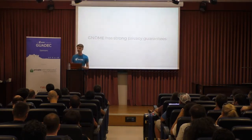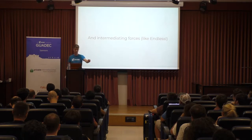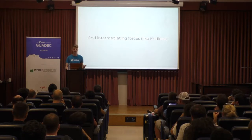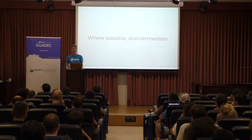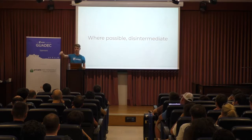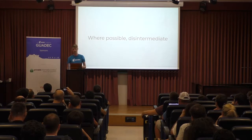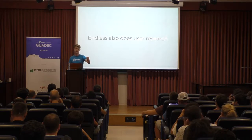GNOME has strong privacy principles and possibly more importantly, intermediating forces — very few people get GNOME's software directly from GNOME. It always comes through a distributor like Endless; we change things, maybe strip stuff out. Debian certainly makes no bones of stripping out a lot of this kind of stuff, and that's what their community wants. Metrics are an interesting signal, but they're not the be-all and end-all. Where possible, the GNOME community should attempt to disintermediate these intermediaries. New containerized application delivery formats like Flatpak and Snap are really important for developers to get directly to their end users.